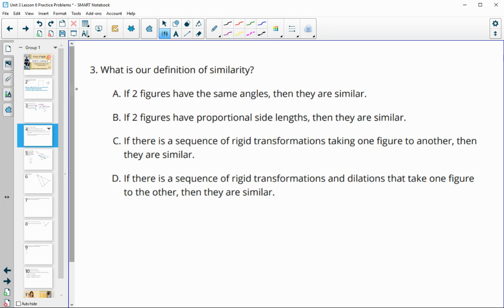Number three, what is our definition of similarity? A says two figures that have the same angles are similar. That's not true. If two figures have proportional side lengths, then they're similar. That's not true. If there's a sequence of rigid transformations that takes one figure to another, then they're similar. If it's just rigid transformations, then they're going to be congruent, so this one's not true. For D, they add in rigid transformations and dilation. So the dilations is what makes them similar versus just congruent. So D would be the correct answer.